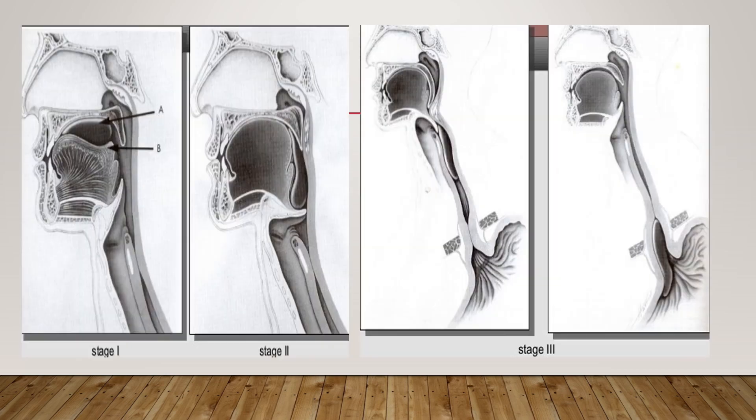In this diagram, you can see the bolus in the oral phase, then it moves into the pharyngeal phase, then the involuntary esophageal phase, and finally it enters the stomach.